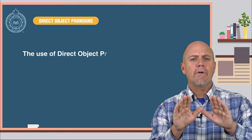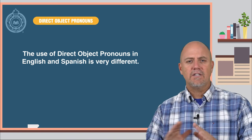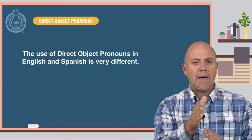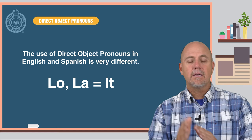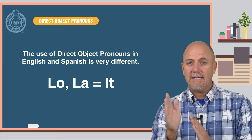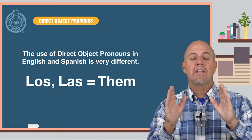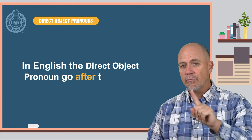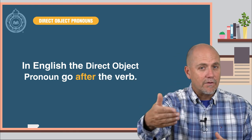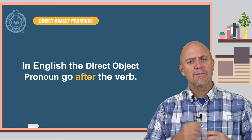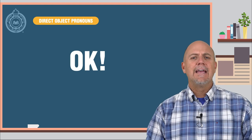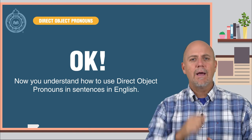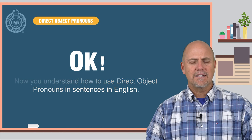The use of direct pronouns in English and Spanish is very different. Make sure you understand that the direct object pronouns lo and la equal 'it' in English, and los and las equal 'them.' And never forget where the direct object pronouns go in English — after the verb, not before the verb like in Spanish. Now you understand how to use direct object pronouns in sentences in English. I will see you back here again for the next lesson. Good luck.